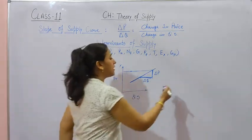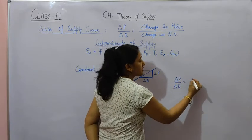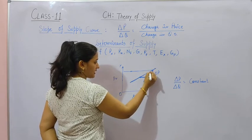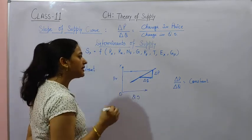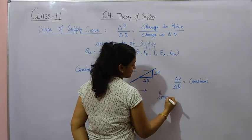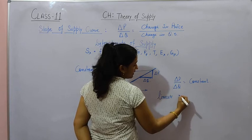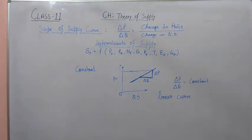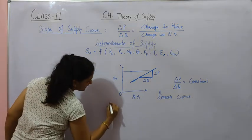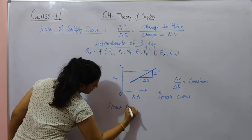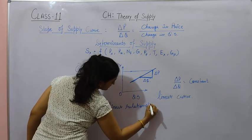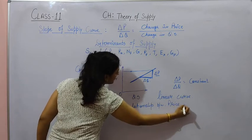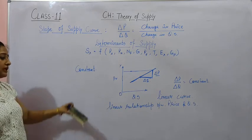So, on every level, the ratio of change in P upon change in Q is constant. And because supply curve is a straight line, this means there is a linear relationship between change in price and change in quantity supplied. The relationship is linear.